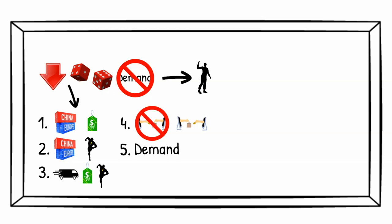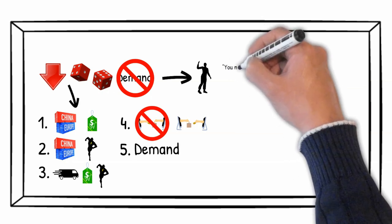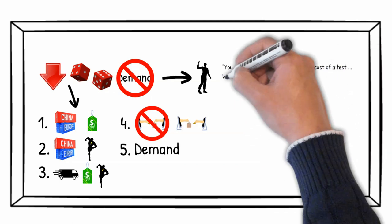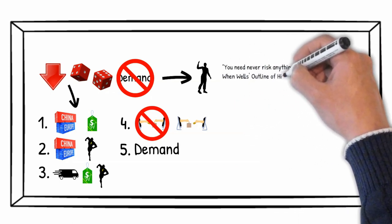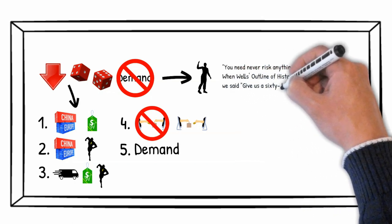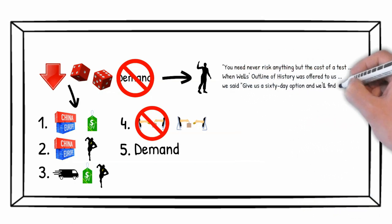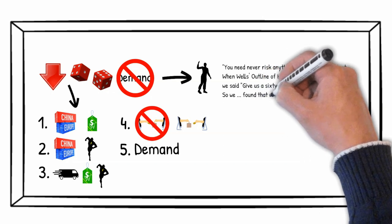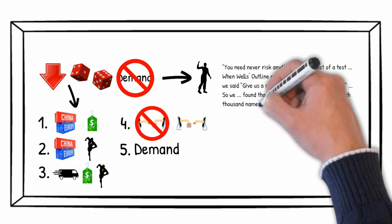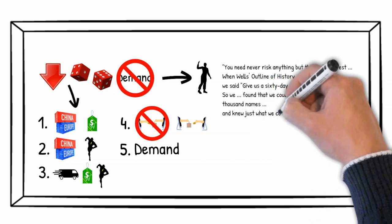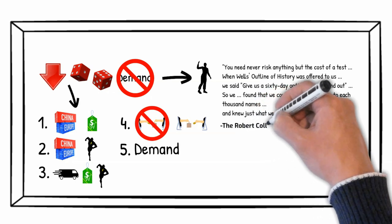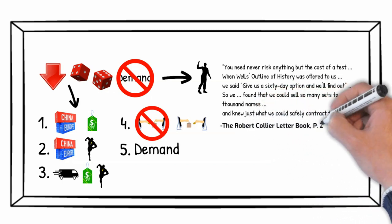In Robert's words, you need never risk anything but the cost of a test. When Wells' outline of history was offered to us, we said, give us a 60-day option and we'll find out. So we found that we could sell so many sets to each thousand names, and knew just what we could safely contract to do. The Robert Collier letterbook, page 237.